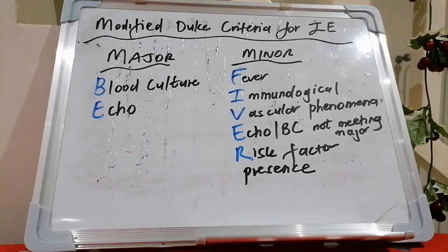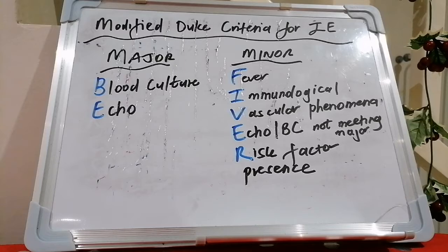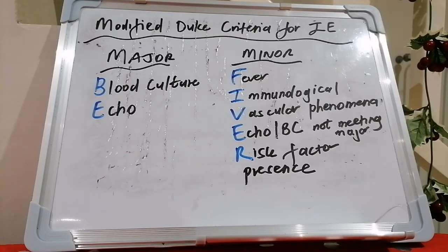Infective endocarditis is defined as infection of the endocardial surfaces of the heart, primarily of one or more heart valves, mural endocardium, or a septal defect. Often these valves have already undergone some degree of damage or trauma from a prior insult — commonly in our setting, rheumatic heart disease.